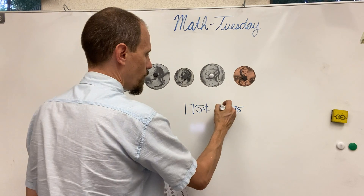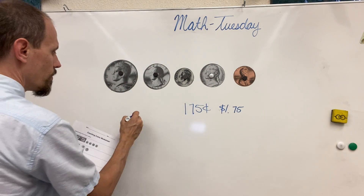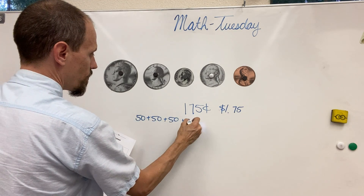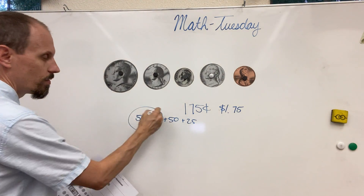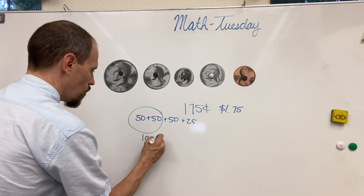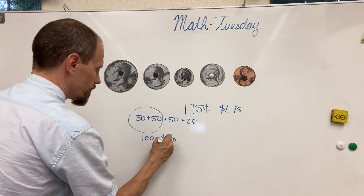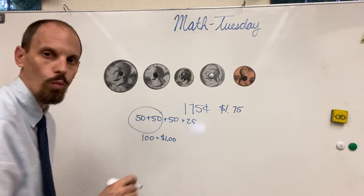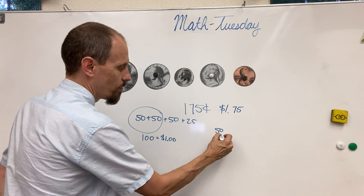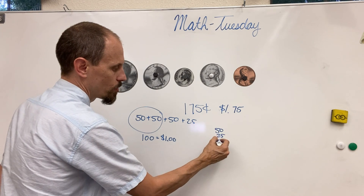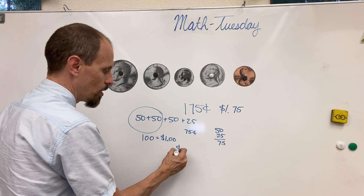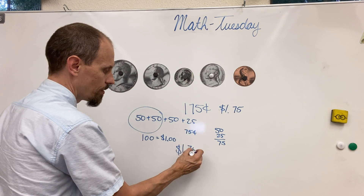We don't have to put the cents on — we put the dollar sign. Because we have 50 plus 50 plus 50 plus 25. Right there, 50 cents and 50 cents equals 100 cents or $1. Here we have 50 cents plus 25. So let's go: 50 plus 25. 5 plus 0 is 5, 5 plus 2 is 7. So this is 75 cents. We're going to add them together — it's going to be $1 and 75 cents.